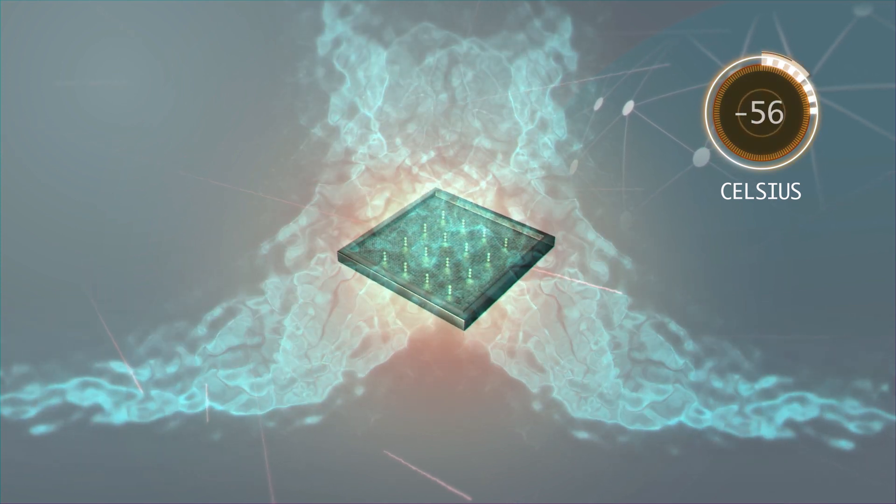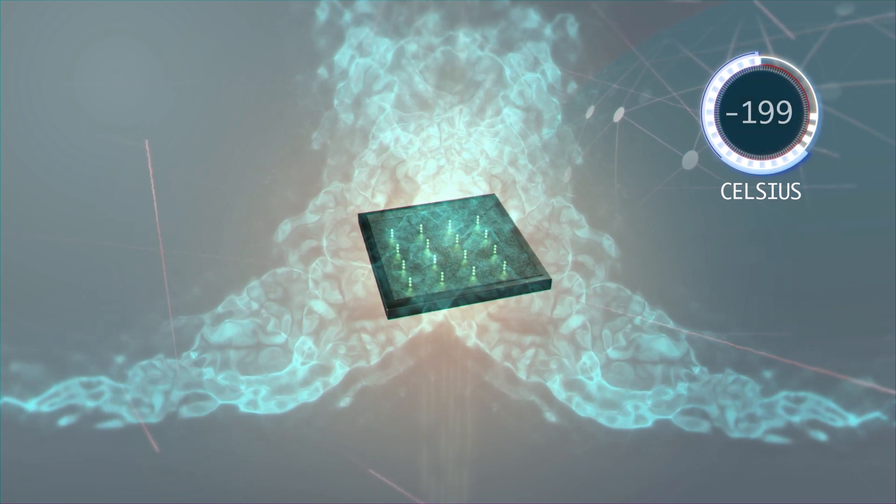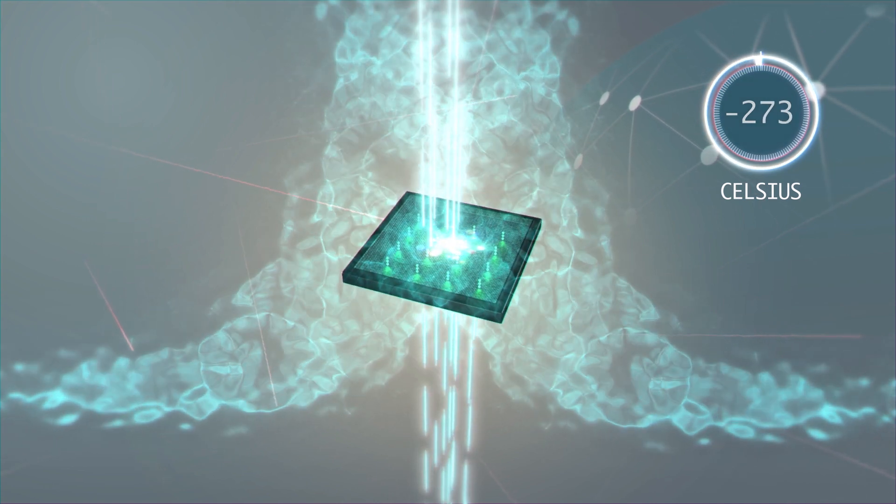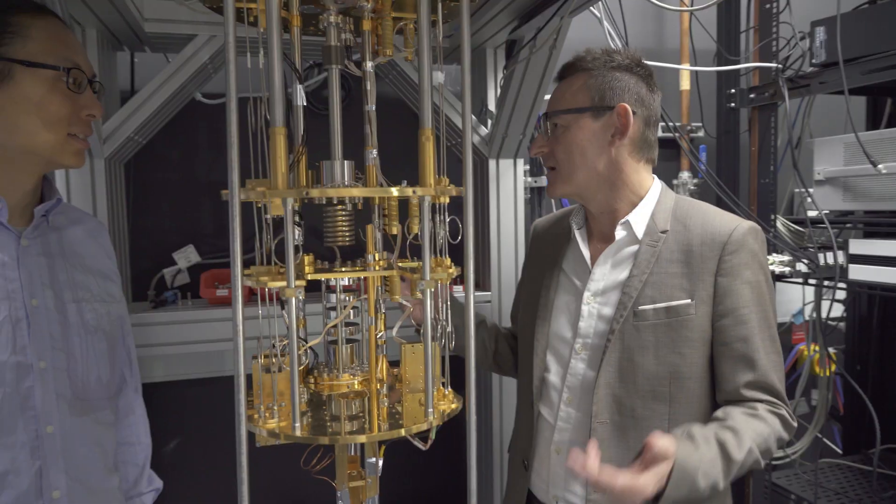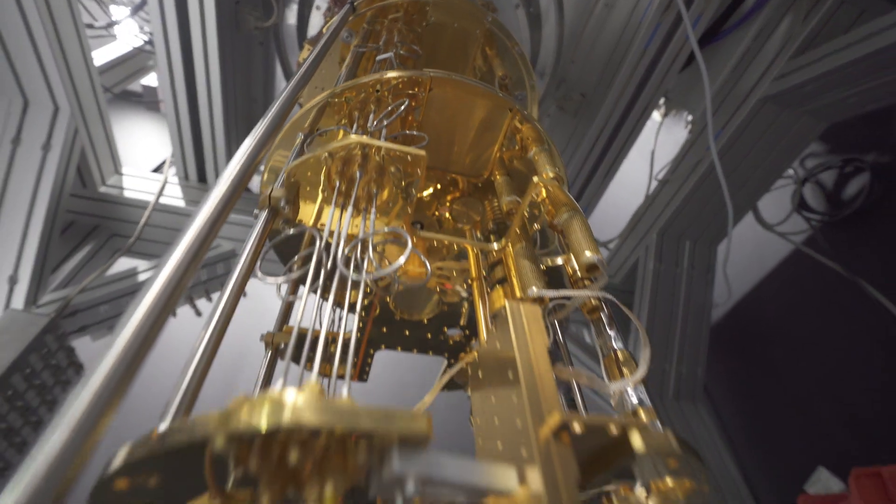Furthermore, these superconductor-based quantum chips need to be cooled down to one-tenth of a degree above absolute zero, which is minus 273 degrees Celsius. So you need very large, sophisticated and expensive coolers called dilution refrigerators to keep them cold.